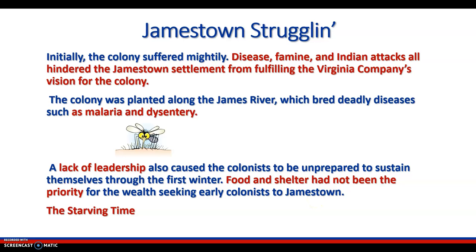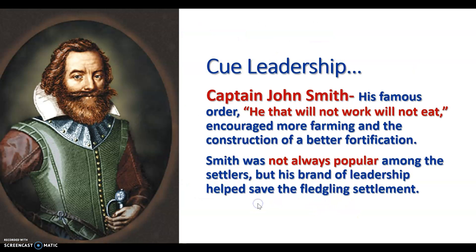Jamestown struggled initially. The colonies suffered mightily — disease, famine, and Indian attacks all hindered the Jamestown settlement from fulfilling the Virginia Company's vision for the colony. The colony was planted along the James River, which bred deadly diseases such as malaria and dysentery. A lack of leadership also caused the colonists to be unprepared to sustain themselves for the first winter. Food and shelter had not been a priority for the wealth-seeking early colonists. This was known as the starving time. Captain John Smith stepped in with his famous orders: 'He that will not work will not eat.' He encouraged more farming and construction of better fortifications, and his leadership ultimately saved the colony.